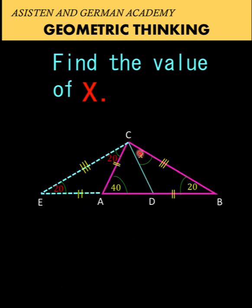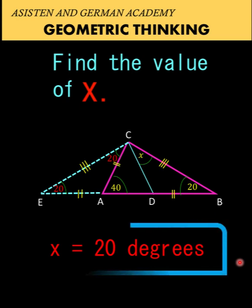Since this angle with a measure of x degrees is congruent to this angle with a measure of 20 degrees, we now know that the measure of x is 20 degrees. This is our final answer.